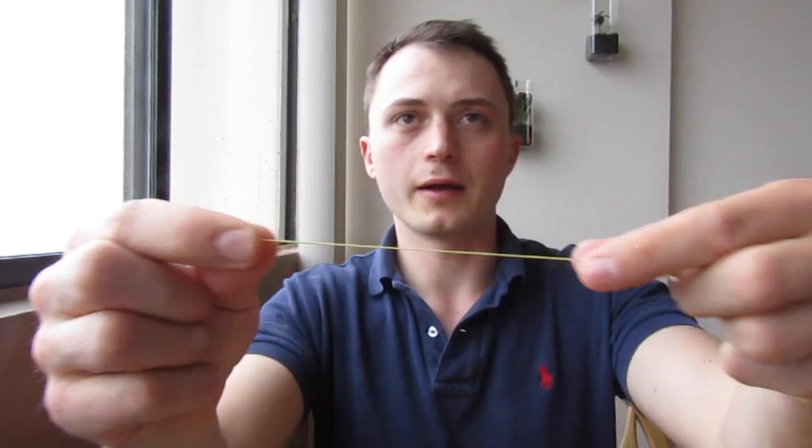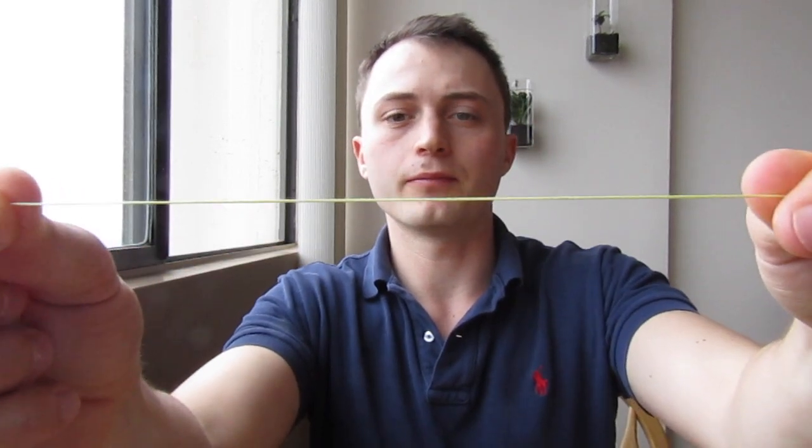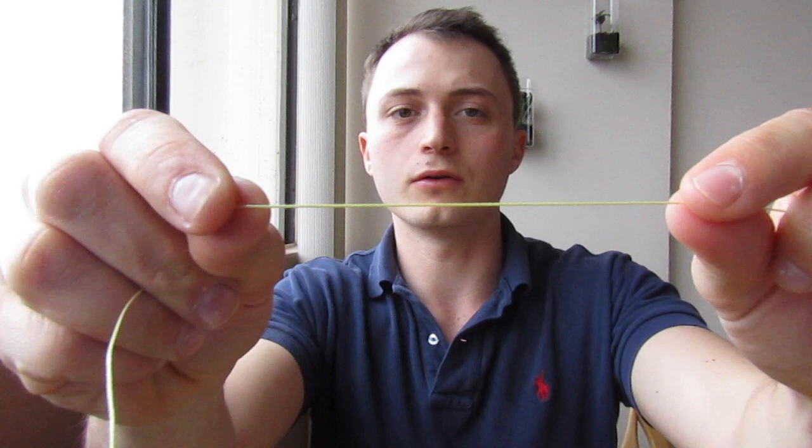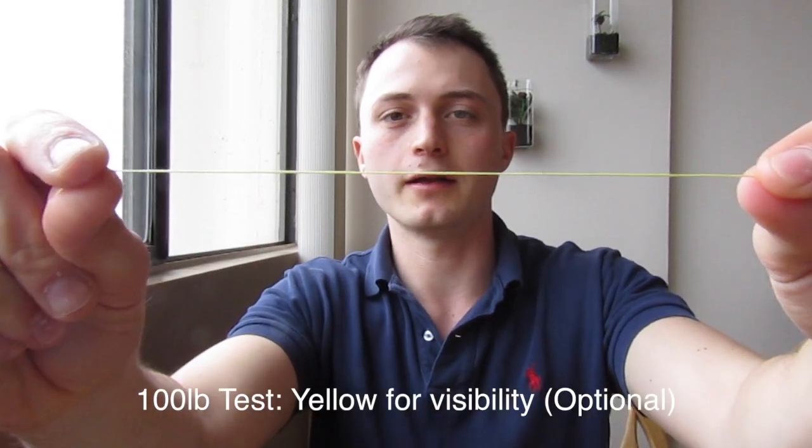Today I'm using my main line, which is a yellow tough line 100 pound test. I'm using this just today because it's nice and bright and easier to see while I tie the knot.